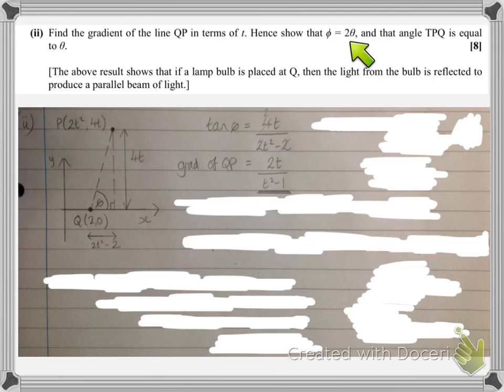Now, hence show this. Well, we've got an expression for tan phi, and if phi is going to be 2theta, we could try looking at the expression for tan 2theta using the double angle formula and the fact that we know that tan theta from the previous part of the question is 1 over t. So tan 2theta will be 2 tan theta over 1 minus tan theta squared. So 2 tan theta, 2 times tan theta which is 1 over t, over 1 minus tan squared theta, so that's 1 over t all squared.